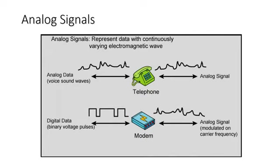As the figure shows, analog signals can be used to transmit both analog data represented by an electromagnetic signal occupying the same spectrum, like voice sound waves, and digital data using a modem, which is a modulator or demodulator. A modem converts binary data to an analog signal by encoding the digital data onto a carrier frequency. However, an analog signal will become weaker or attenuate after a certain distance.